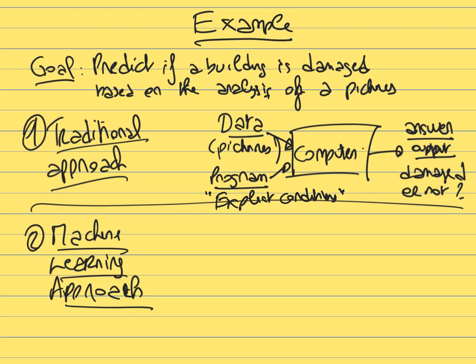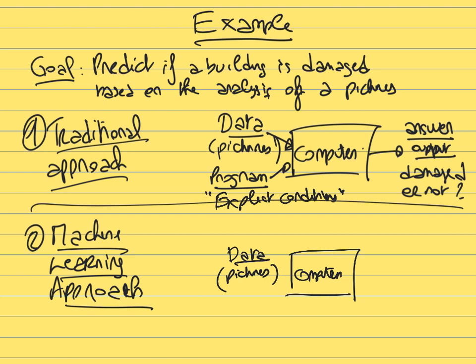In the machine learning paradigm, you still provide data (pictures), but your goal is not to directly output whether the building is damaged by writing explicit rules. If you don't know how to recognize damage, it may be impossible to write a program with explicit conditions.